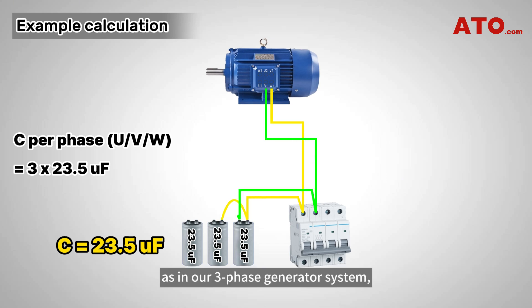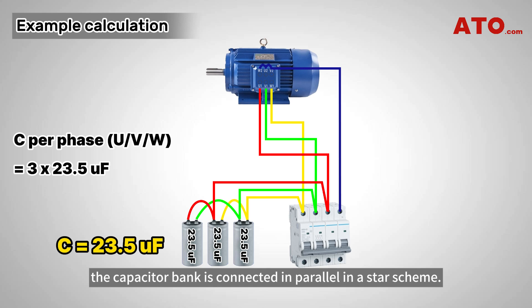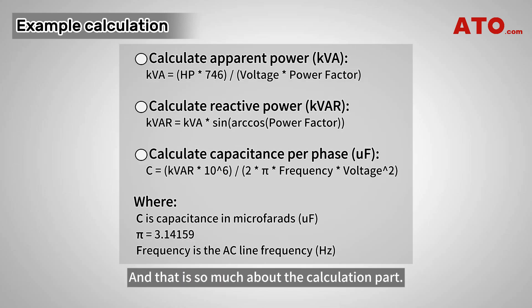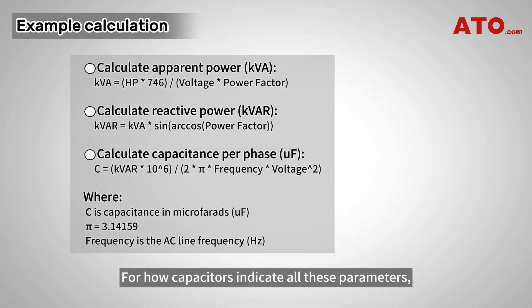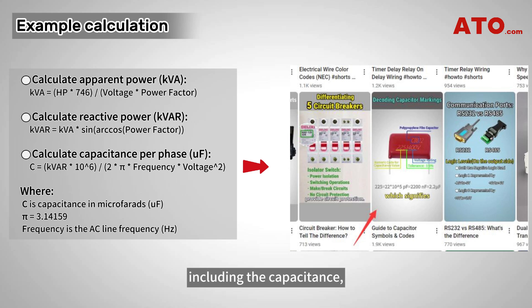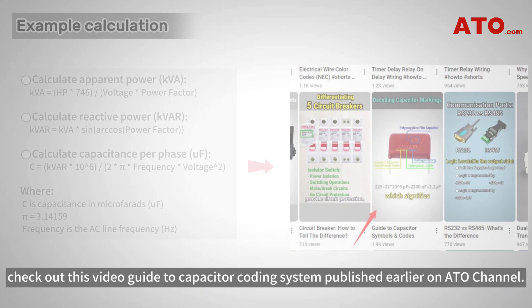As in our three-phase generator system, the capacitor bank is connected in parallel in a star scheme. For how capacitors indicate all these parameters, including the capacitance, check out the video guide to the capacitor coding system published earlier on the ATO Channel.